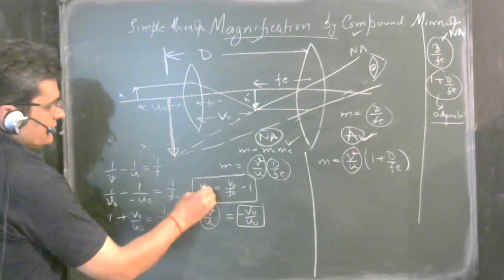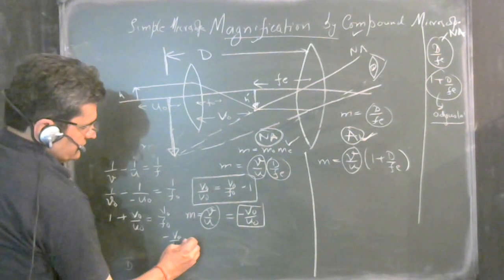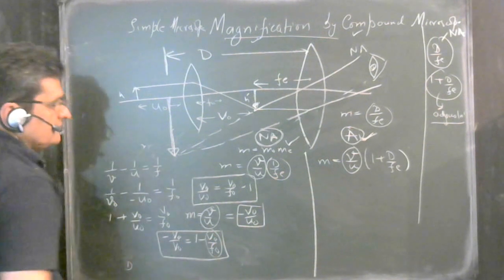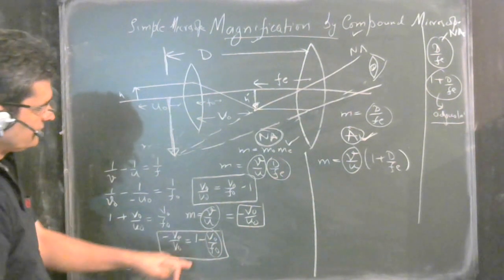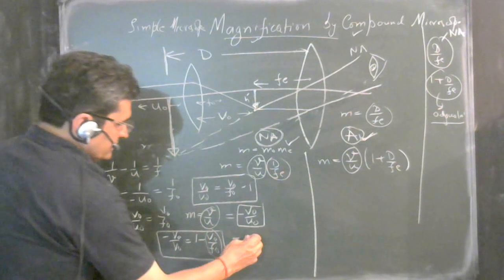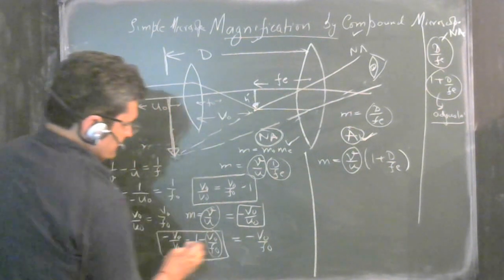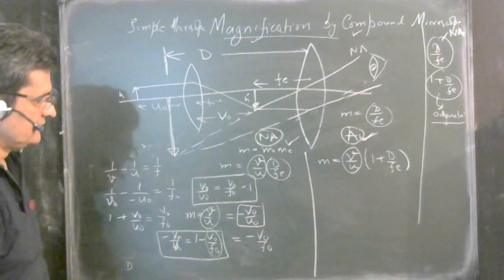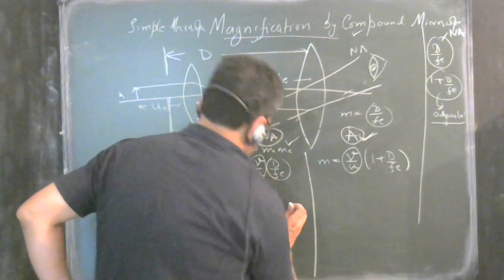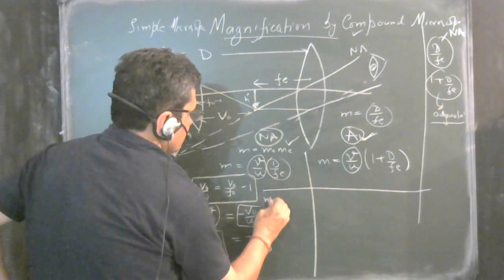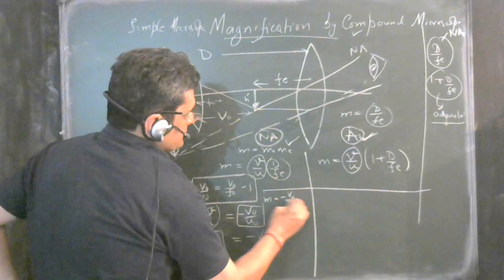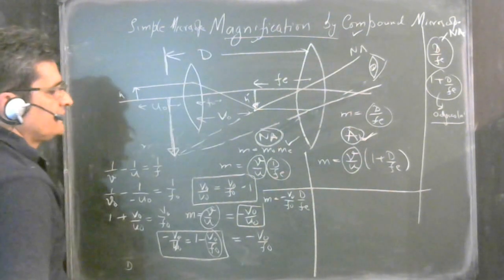So v/u = −vo/uo = 1 − vo/fo. Since fo is very small, vo/fo is very large — much greater than 1 — so we can approximate: −vo/uo ≈ −vo/fo. Therefore the magnification of the objective simplifies to −vo/fo.